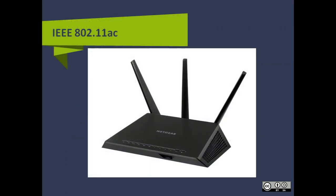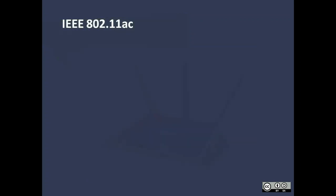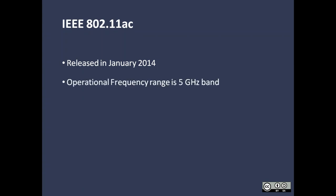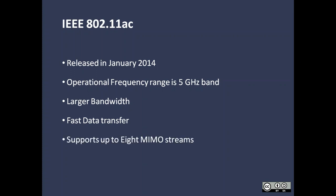Let's move to 802.11 AC. 802.11 AC was developed in January 2014. It operates in the 5 GHz frequency range and has the largest bandwidth, with very fast data transfer compared to previous standards. It supports up to 8 MIMO streams.